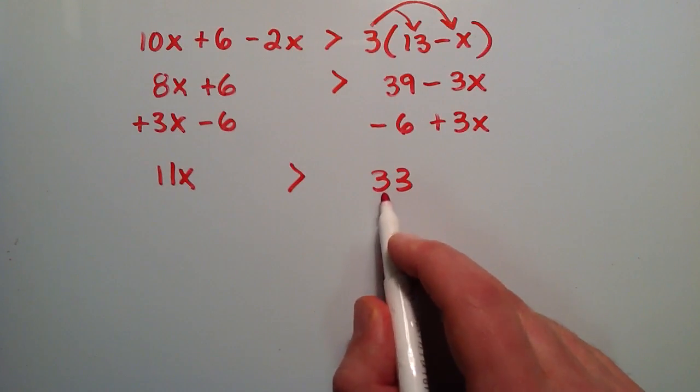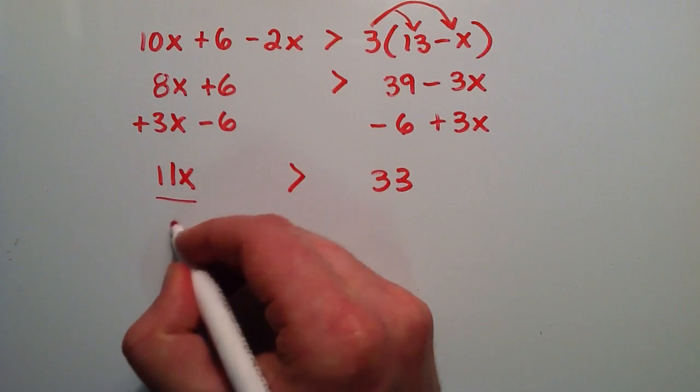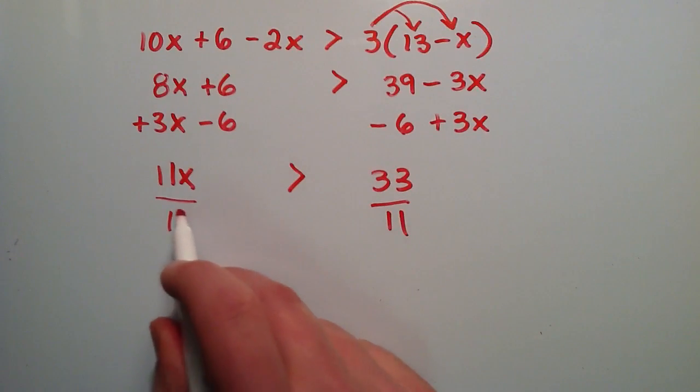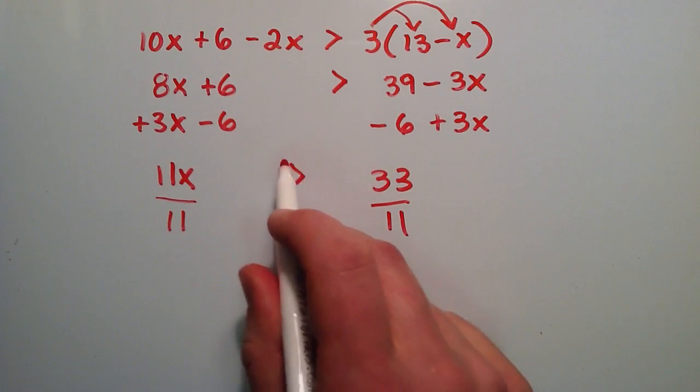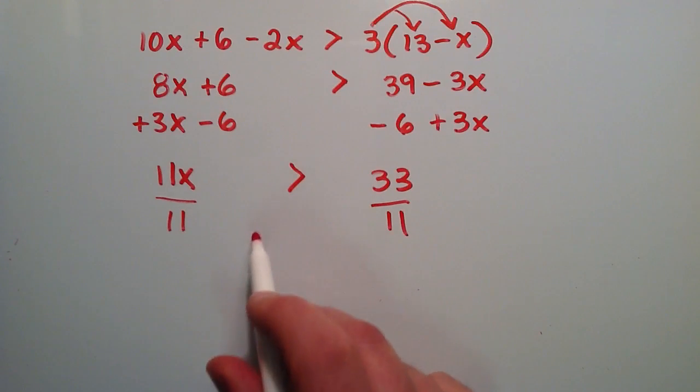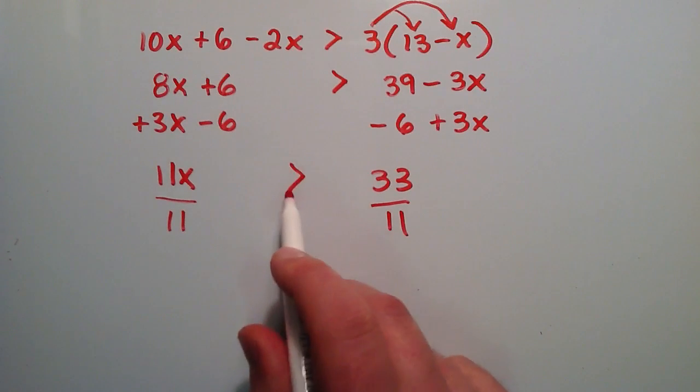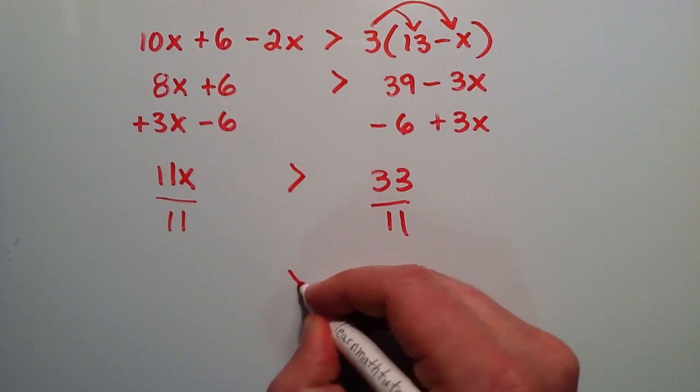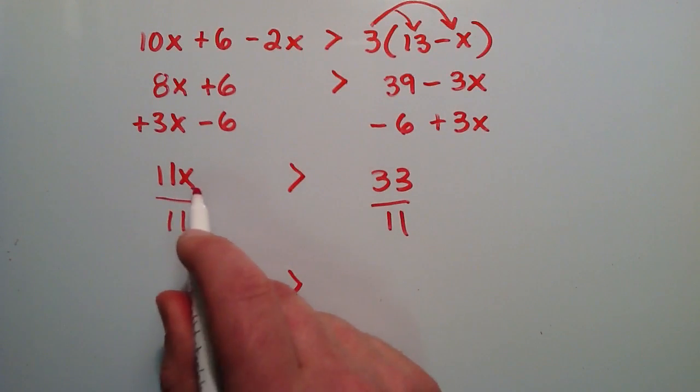So what we need to do now is divide each side by 11. So this time we're dividing by a positive number. So if we multiply or divide by a positive number, the sign stays the same. It's only when we multiply or divide by a negative number that we flip it. So it's positive this time, so we're just going to leave the sign the same.